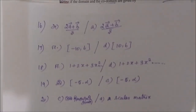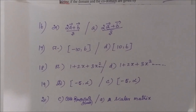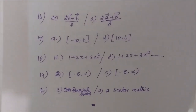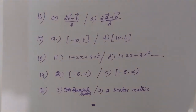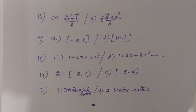Then for question number 16: option A, 2a plus b by 3. Question number 17: option D, closed interval 10. Question number 18: option D, 1 plus 2x plus 3x squared, etc.